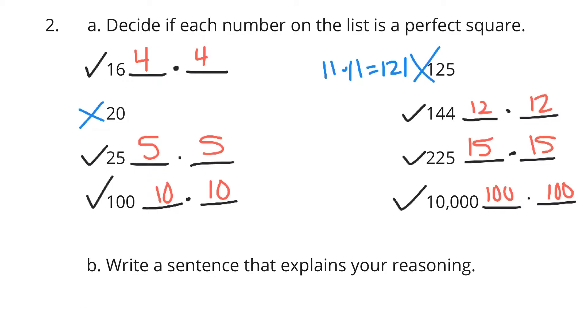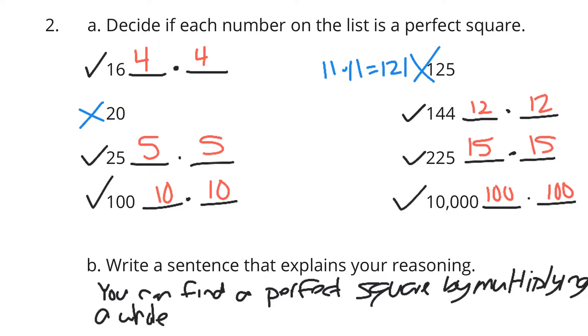So 10,000 is a perfect square. And to write a sentence that explains your reasoning, we can say you can find a perfect square by multiplying a whole number by itself. In other words, 4 times 4 is 16, so 16 is the perfect square. 5 times 5 was 25, so 25 is the perfect square. But there's no whole numbers between 4 and 5, so 20 is not a perfect square.